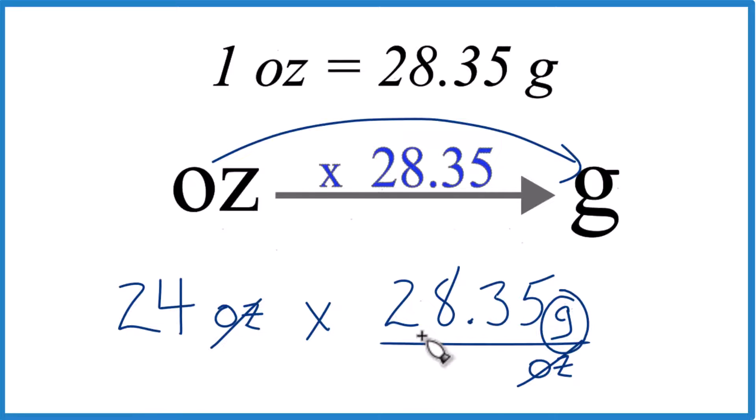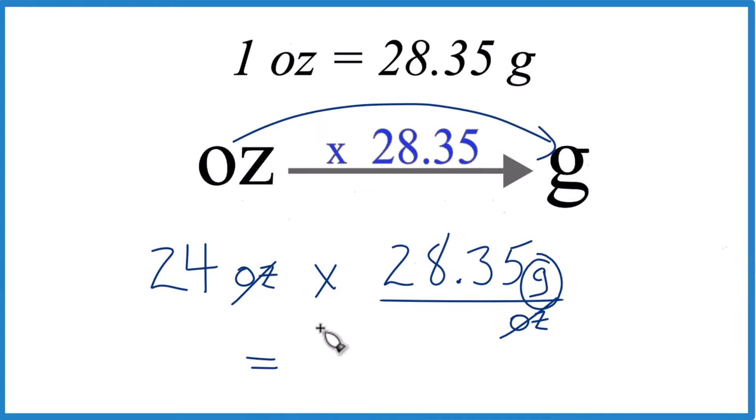So 24 times 28.35 grams, we end up with 680.4, and the units are the grams that we're looking for. That's how you convert 24 ounces to grams.